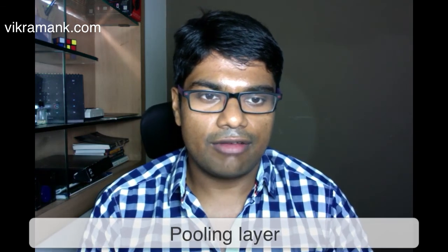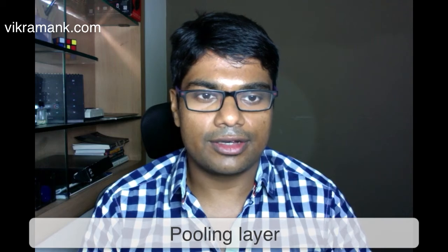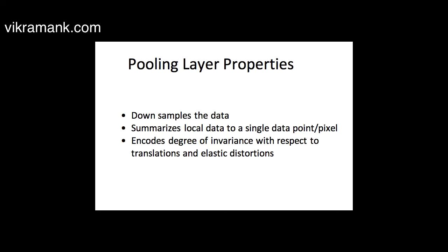Moving on, we have the pooling layer — another important layer for deep neural networks. One of the central ideas in deep learning philosophy is to down-sample the input data while increasing the depth, meaning increasing the number of feature maps but reducing the spatial size. The key functions of the pooling layer are to down-sample the data, summarize local data to a single point in the output space, and encode a degree of invariance to translation and elastic distortions.